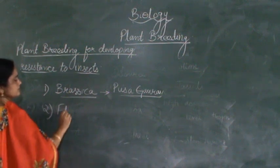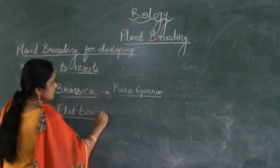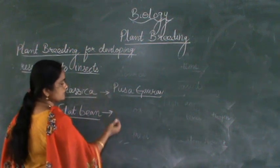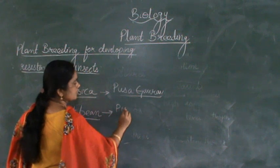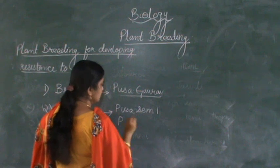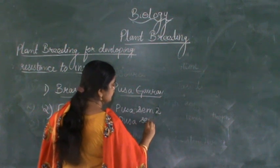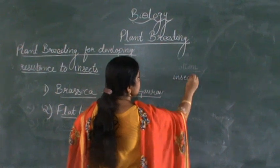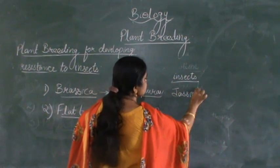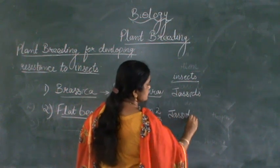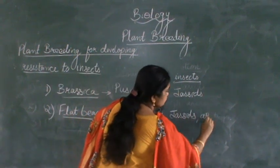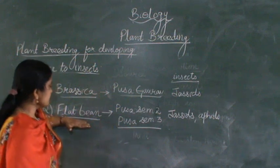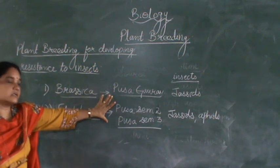Then you have another example — that is flat bean. There are different hybrid varieties of flat bean which have been produced which cannot be affected by insects. These are Pusa Sem 1, Pusa Sem 2, and Pusa Sem 3. These varieties develop resistance towards insects — including aphids and fruit borers.